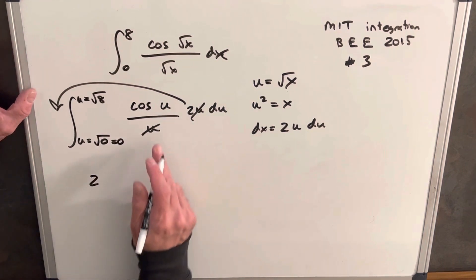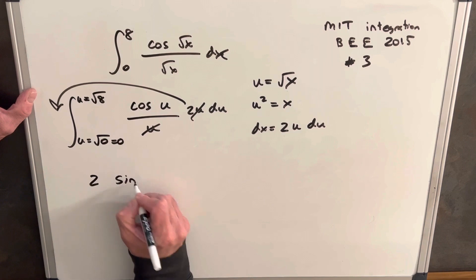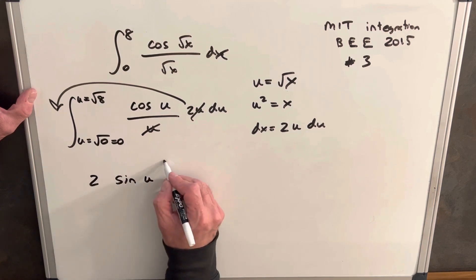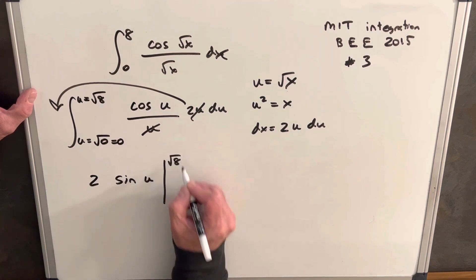So we're going to have 2. The integral of cosine of u is going to be sine of u. And then we just have these updated limits, square root of 8 to 0.